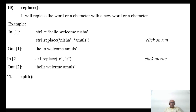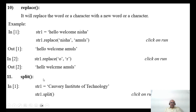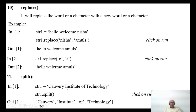Now we are going to split. The split function splits a string into a number of substrings. If str1 = 'Cauvery Institute of Technology' and you call str1.split() without any argument, it splits wherever there are white spaces. The output will be: 'Cauvery', 'Institute', 'Of', 'Technology' — four separate strings.